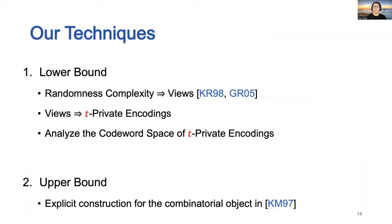Regarding our techniques for lower bound, we connect the randomness complexity to the number of parties' views and then to the size of the codeword space of t-private encodings. Our result is obtained by analyzing the size of the codeword space of t-private encoding schemes.